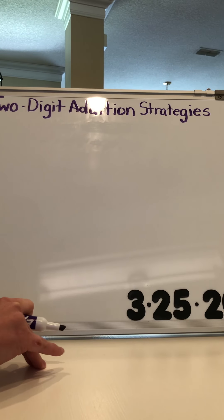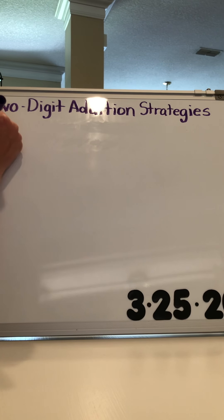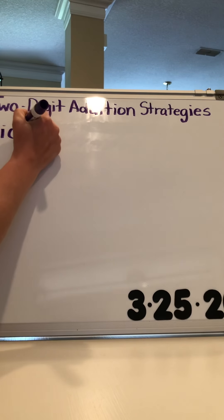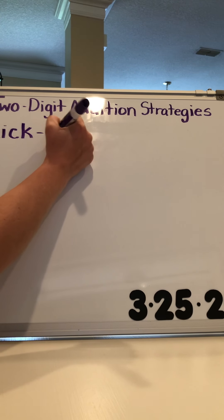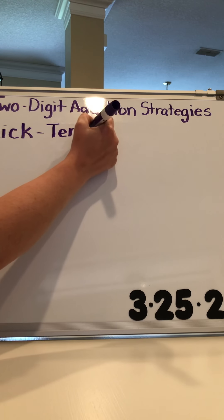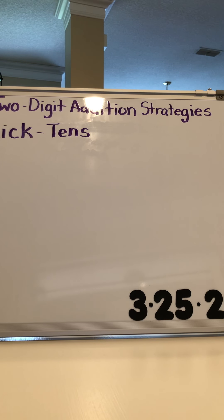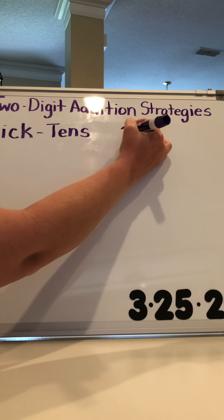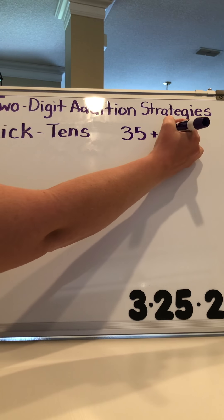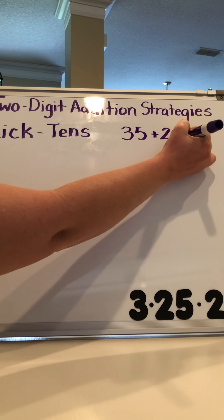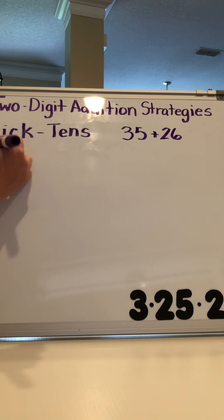The first strategy I want to talk about is quick tens. Of all the strategies this is the most concrete paper-based strategy. So even though they won't be using actual manipulatives in their hands to work out the addition problems, this provides a visual for them which provides a little more concrete understanding. So say for example I have the problem 35 plus 26.